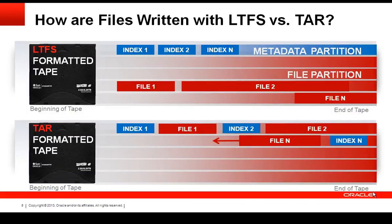That's a little different than how a TAR-formatted tape works, where there isn't a strict partition — it's written sequentially as index, file, index, file, index, file. There's nothing wrong with that per se, since it is also a self-describing format. But the downside is that it's difficult to access what is on the tape quickly. With an LTFS-formatted tape, you can read the metadata partition and immediately know your entire file contents on that tape, whereas with a TAR-formatted tape you would have to read the entire tape before really knowing what was on it.